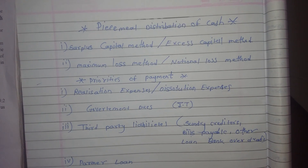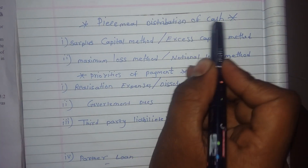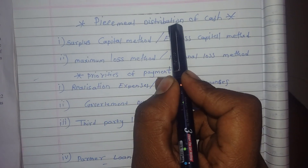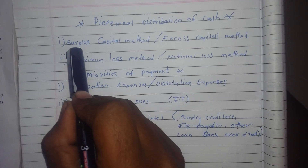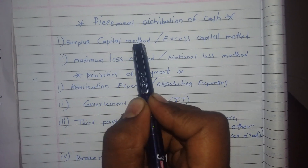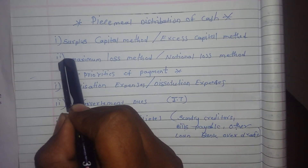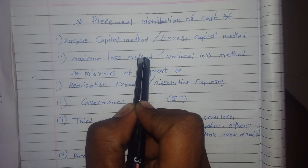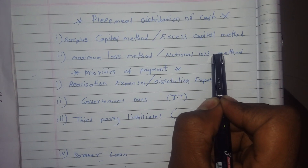Hello guys, my name is Sahil Masuldar and today I am going to teach you about the Piecemeal distribution of cash. There are two methods of calculation of Piecemeal distribution of cash. First is surplus capital method, also known as excess capital method, and the second is maximum loss method, also known as notional loss method.